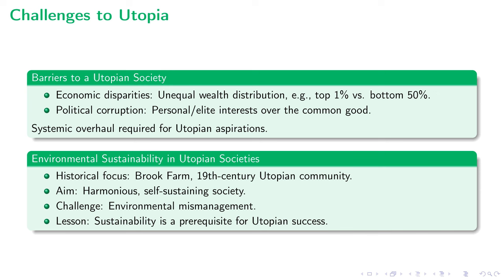The story of Brook Farm, a 19th century utopian community, warns us against the pitfalls of environmental mismanagement. Despite its noble intentions, Brook Farm collapsed under environmental strains, sounding a clarion call for sustainability in our utopian blueprint. These insights reconnect us back to the present, highlighting that tackling economic disparities, political corruption, and environmental concerns is fundamental to our journey towards utopia. These challenges incite us to rethink our systems, bridging activism with aesthetics, urgency with utopia, making our pursuit of bridging the gap between the real and the ideal more meaningful.